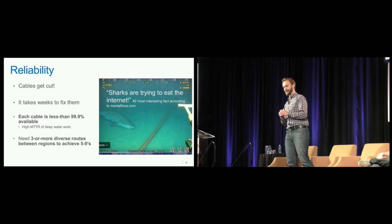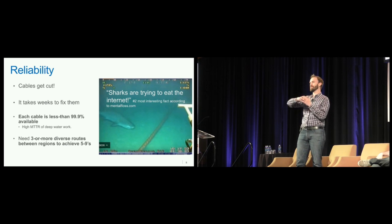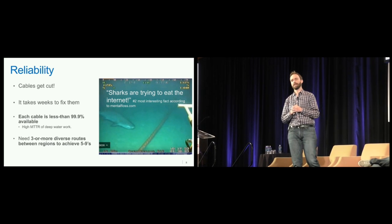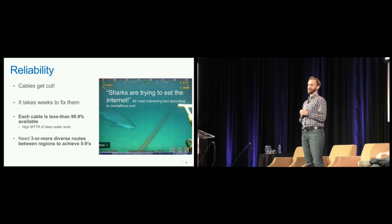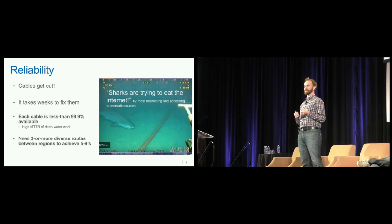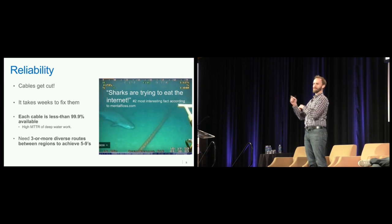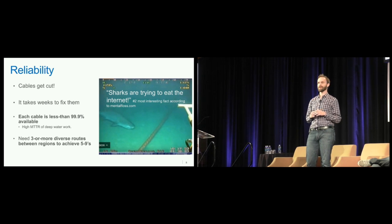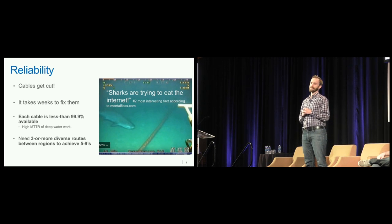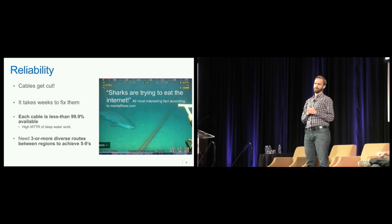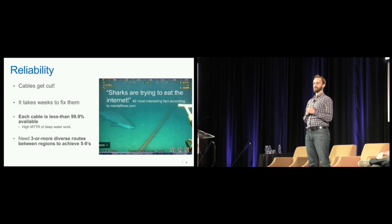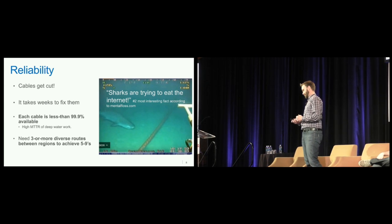You can't just run one subsea cable. To get one bit from here to Japan with any kind of reliability where you can stand in front of customers and guarantee delivery, you need three cables — and if you build it wrong, you'll need more than three. These cables cost hundreds of millions of dollars each, so it is a very expensive business. Three or more cables just to get a bit across the ocean.